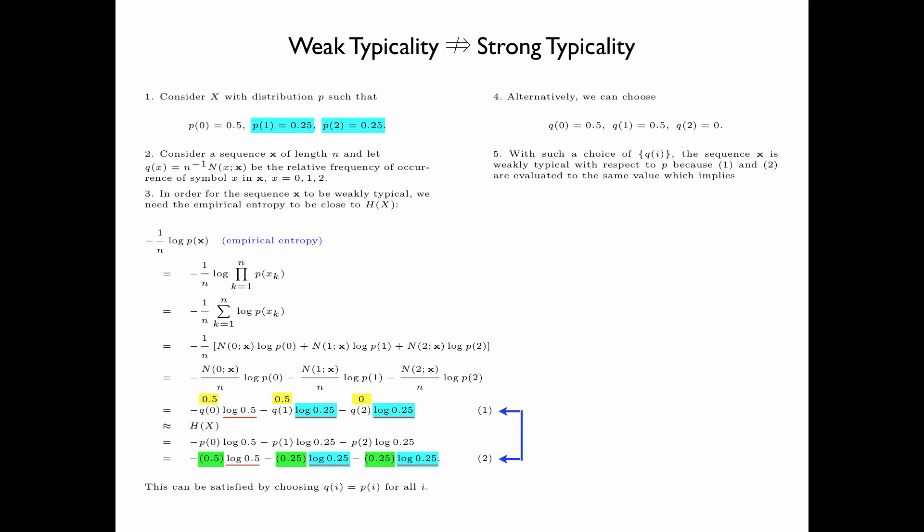With such a choice of q(i), the sequence x is weakly typical with respect to p, because expressions 1 and 2 evaluate to exactly the same value, which implies that the empirical entropy is exactly equal to the true entropy. However, the sequence x is obviously not strongly typical with respect to p, because q, the empirical distribution, is not close to p, the true distribution.